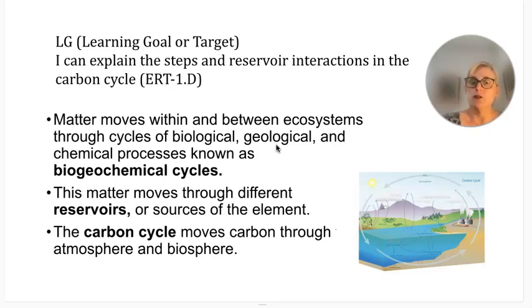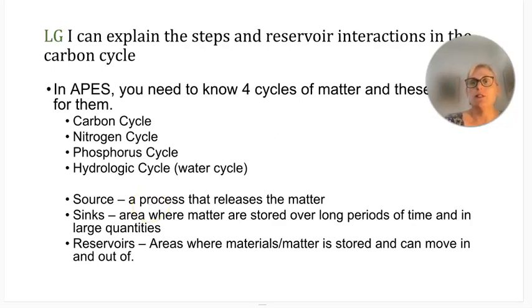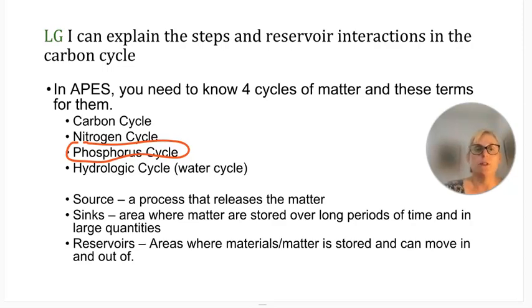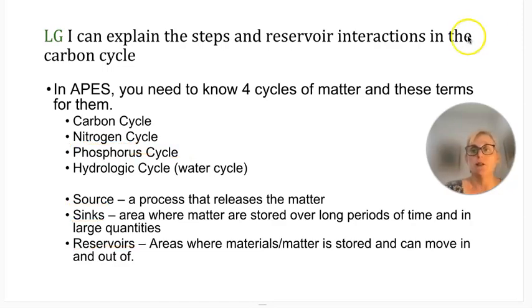The carbon cycle in particular moves through the atmosphere and biosphere — the living parts of the earth. In AP Environmental Science, you have to know four cycles: the carbon cycle, the nitrogen cycle, the phosphorus cycle — which is new — and the hydrologic cycle, a fancy way of saying the water cycle. Key terms: a source is a process that releases matter; a sink is where matter is stored over long periods in large quantities; and a reservoir is an area where matter is stored and can move in and out of.